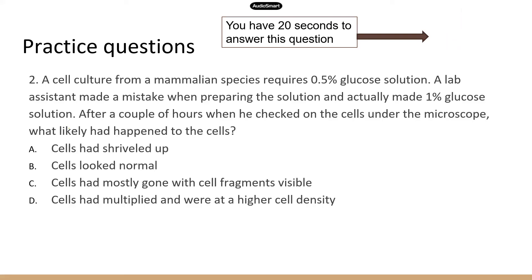This next question is about osmosis — how cells respond to a solution. Normally, the cells require a 0.5% glucose solution, but the lab assistant accidentally made 1%. This makes it a hypertonic solution. When you put cells in a hypertonic solution, they lose water because water moves from low solute concentration to high solute concentration. So water moves out of the cells and they shrivel up — option A is the correct answer.